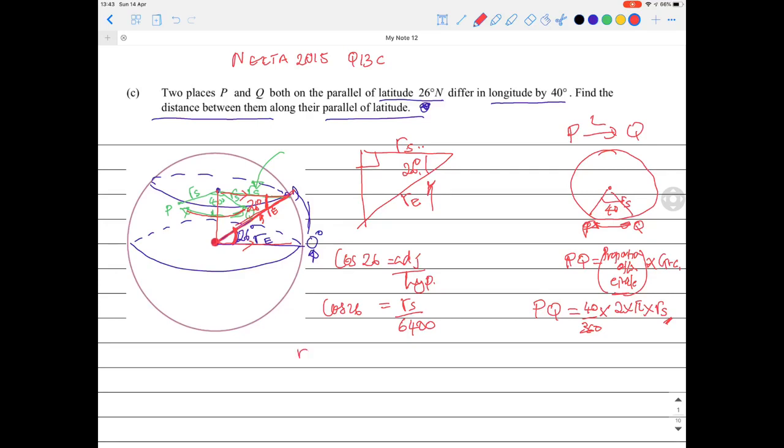So radius of the small circle then is - if you do that calculation, let's write it: 6400 times cos 26. This will give you roughly 5752 kilometers.